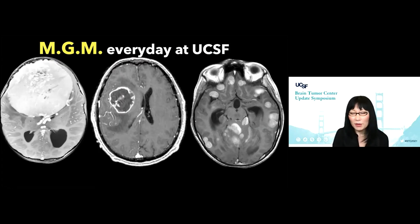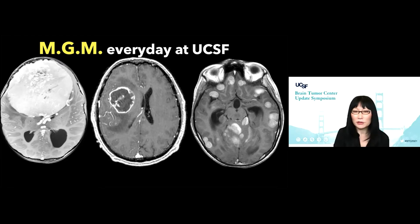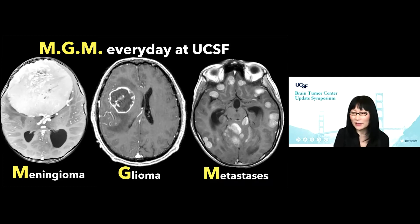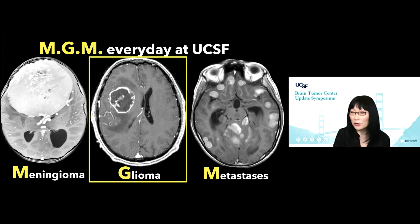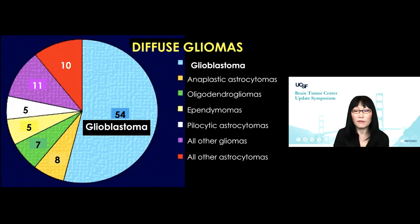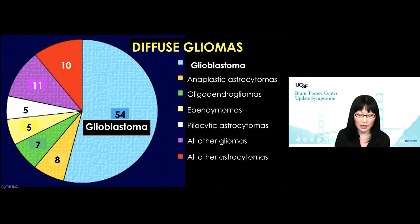I've been working at UCSF for almost two decades and it's literally every day MGM — meningioma, glioma, and metastasis. I see maybe five of these a day. I'm going to focus most of my talk on gliomas, but I will show some examples of other types of tumors as well. Of the gliomas, by far the winner is unfortunately the most malignant of them all, which is glioblastoma — more than half of primary glioma patients we see at UCSF.